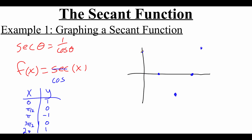When I draw in this graph, I'm going to draw it with a dotted line because this isn't the graph we actually want. We need to make adjustments to this cosine graph to turn it into a secant graph.